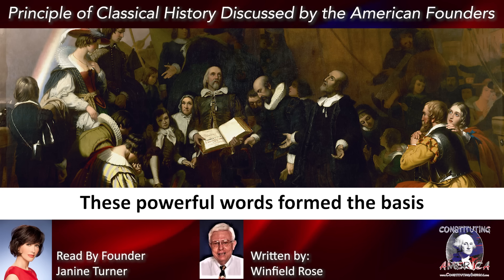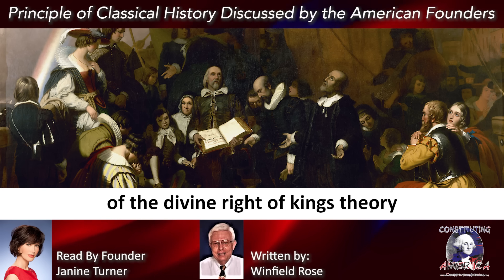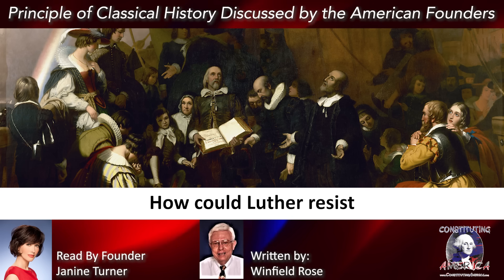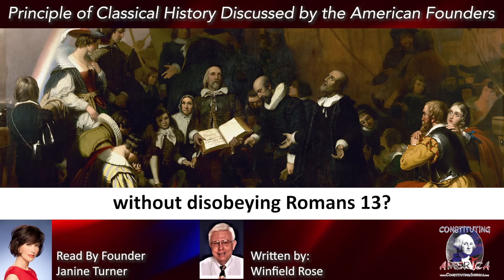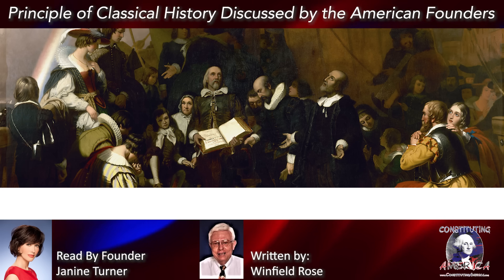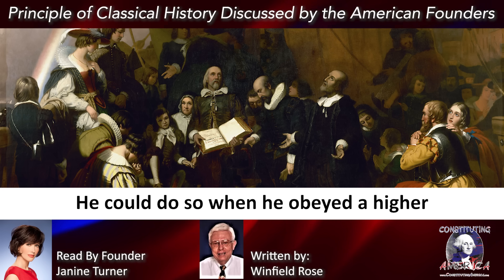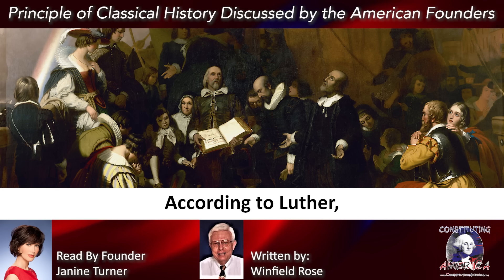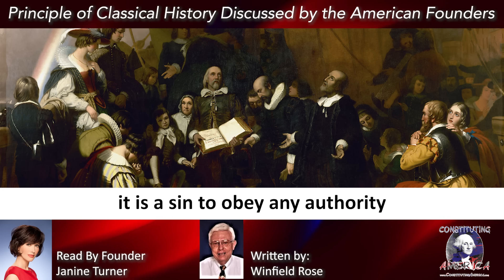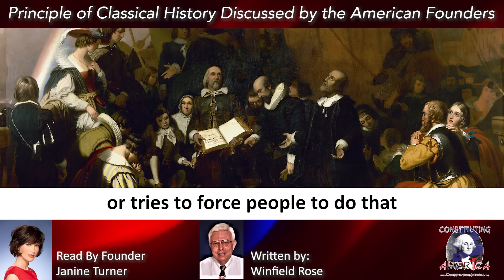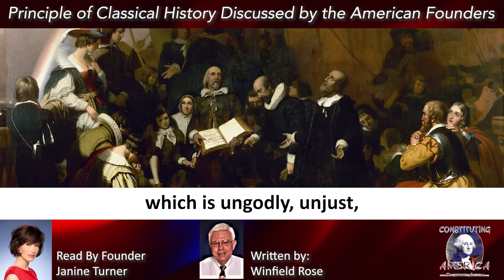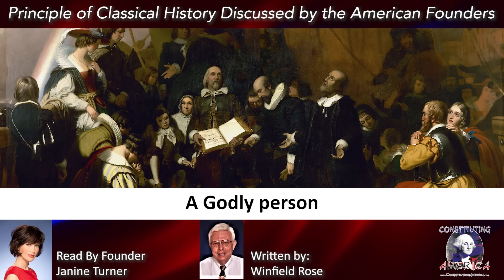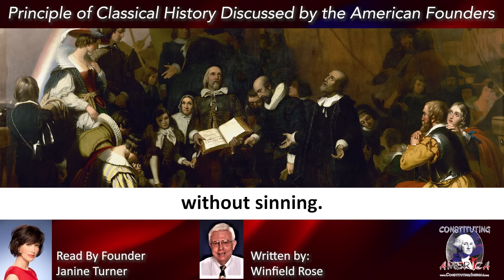These powerful words form the basis of the divine right of kings theory, and in part, the basis of the Pope's authority in the Church. How could Luther resist the Pope and Church without disobeying Romans 13? He could do so when he obeyed a higher authority God required him to. According to Luther, it is a sin to obey any authority that forces or tries to force people to do that which is ungodly, unjust, unrighteous, unlawful, or in other words, wrong. A godly person simply cannot do such things without sinning.